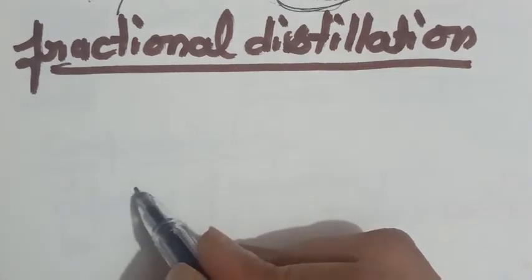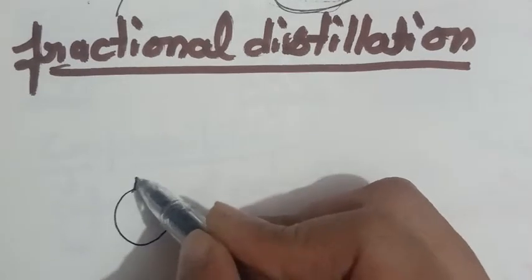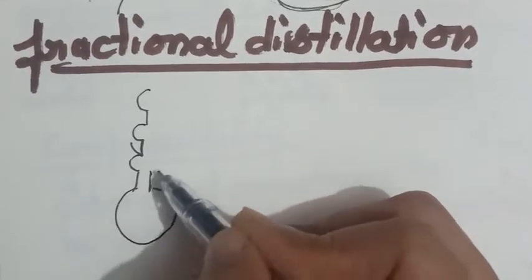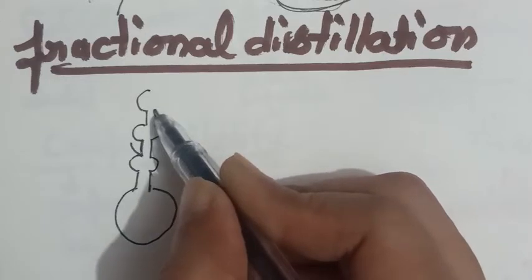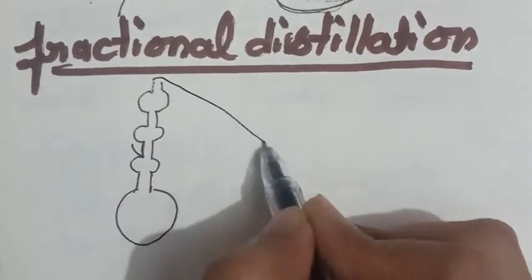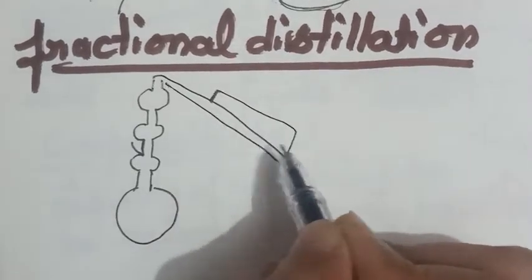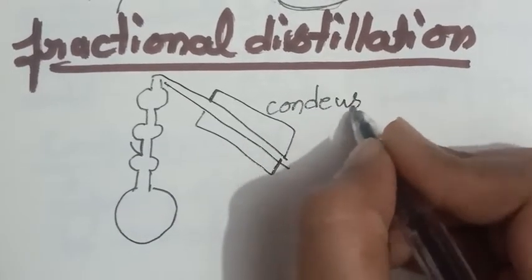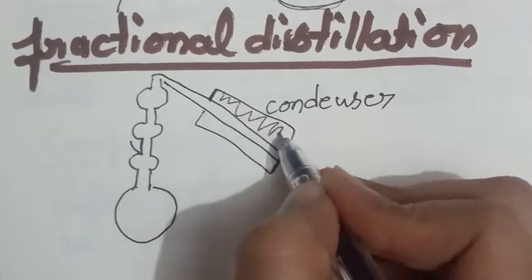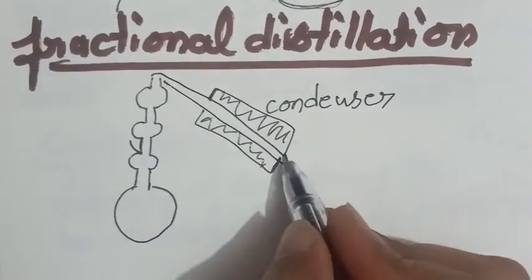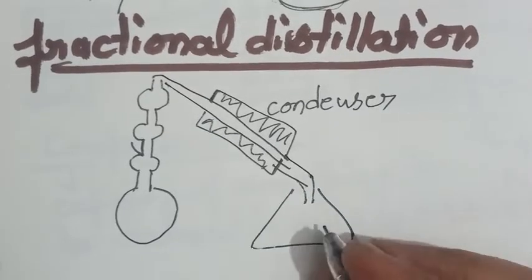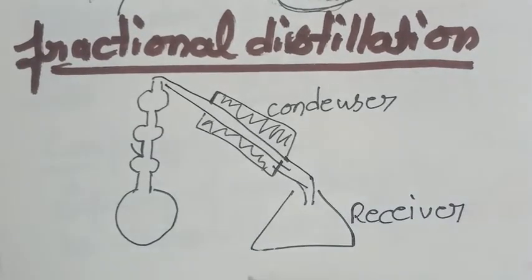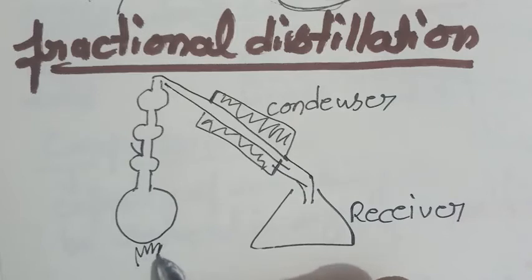In this apparatus setup, the round bottom flask contained various fractions. And then ultimately, it will be here, followed by the condenser. Water is filled around this tube. And then finally, it is opened into a receiver. And here, we have to provide flame.